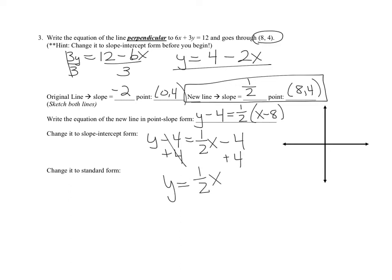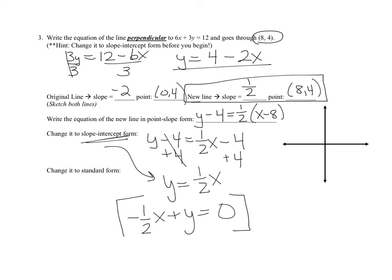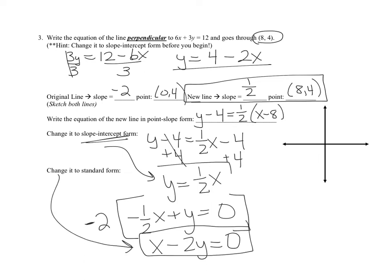Adding 4 to both sides gives y equals 1/2 x, which is the slope-intercept form. If asked for standard form, subtract 1/2 x from both sides to get negative 1/2 x plus y equals 0. Since there can't be fractions and the coefficient of x must be positive, multiply everything by negative 2 to get x minus 2y equals 0.